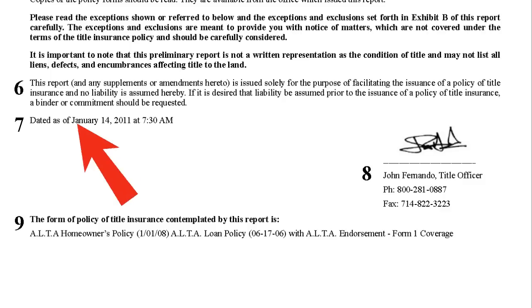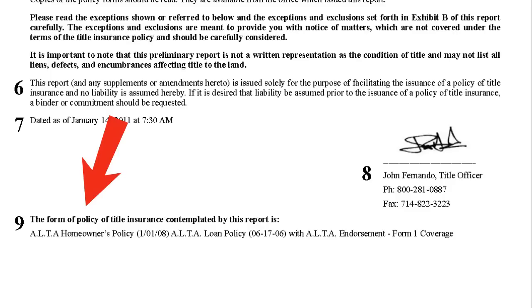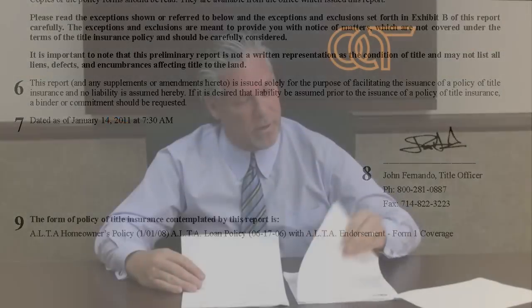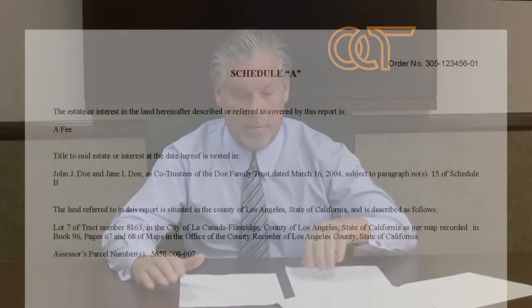Item number nine describes the form of the policy contemplated to be issued on this transaction. We're going to go ahead and move on to our next item, which is Schedule A of the preliminary title report.